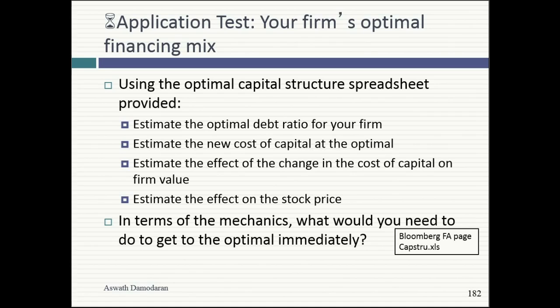Go to the capital structure spreadsheet linked in the shared drive — enter the numbers, it's a 10-minute exercise. Do it while it's fresh; don't wait three weeks. Maybe on the flight back. Charge your laptop, have a backup battery. The number itself isn't what I want in your report. I want you to tell me why your company has the optimal that it does — why is it high, why is it low, why is it in the middle, and what the company should do. This is not just number-crunching; anyone can compute an optimal. I want you to tell me a story about what to do with that optimal in your company.